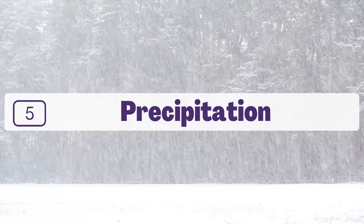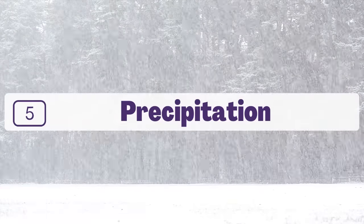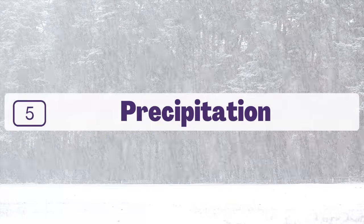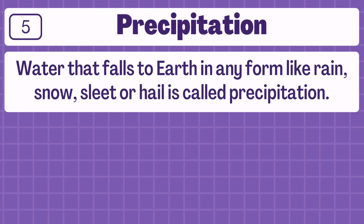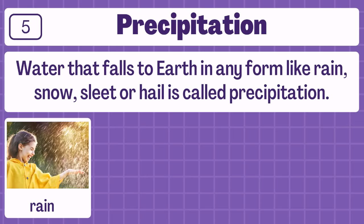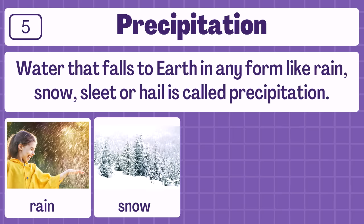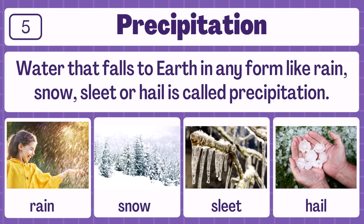Number five: precipitation. Water that falls to Earth in any form — like rain, snow, sleet, or hail — is called precipitation.